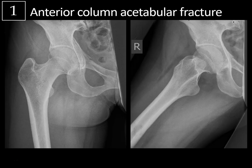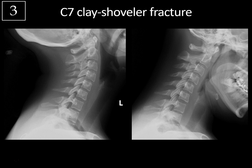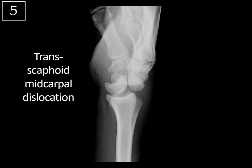Rapid review: Case 1, anterior column acetabular fracture — look at the iliopectineal line for anterior column fractures, the ilioischial line for posterior column fractures, and the medial teardrop for medial column fractures. Case 2, osteochondritis dissecans — most commonly in the lateral aspect of the medial femoral condyle; look for instability signs including a free fragment on x-ray or the T2 rim sign on MRI. Case 3, clay shoveler fracture — most commonly at C7; the spinous processes should be on your cervical spine lateral checklist. Case 4, calcaneal lipoma — well-circumscribed lucency with central calcification (cockade sign); benign, most common in the calcaneus. Case 5, transcaphoid midcarpal dislocation — use the lateral view to evaluate carpal bones, and differentiate perilunate, midcarpal, and lunate dislocation by the lunate's relationship with the radius.